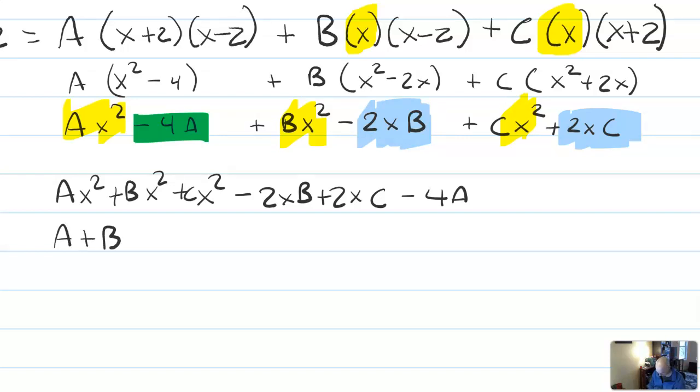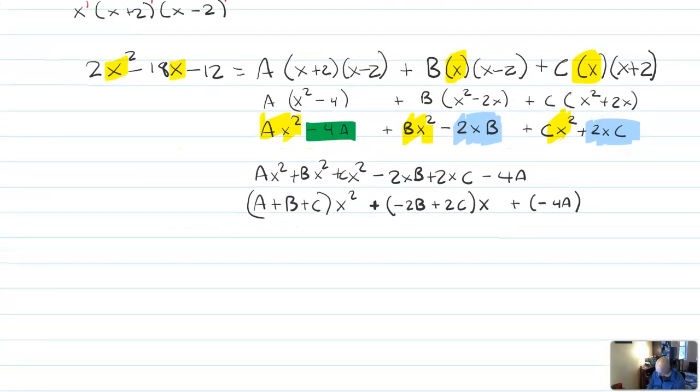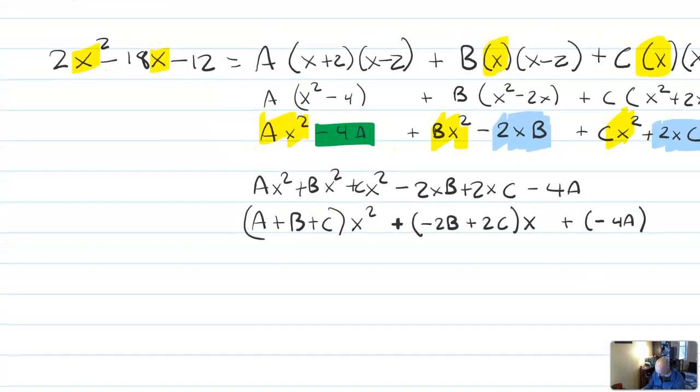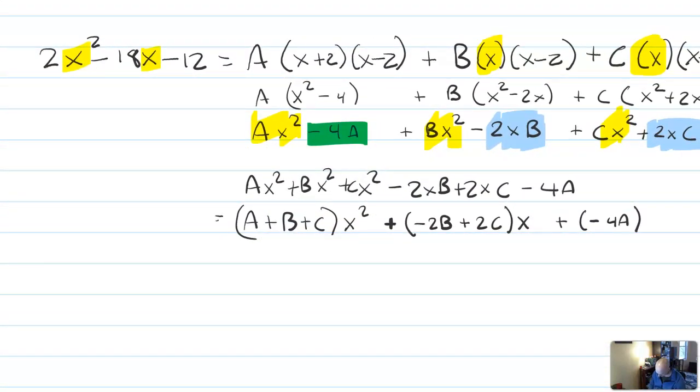So we have a plus b plus cx squared minus... No, we're going to make this plus negative 2b plus 2cx plus negative 4a. Now, obviously, that's a little bit weird in terms of factoring, but what it's going to let us do is look at the parallel structure.